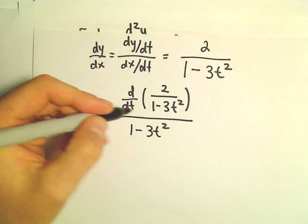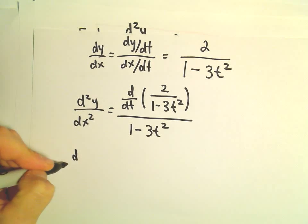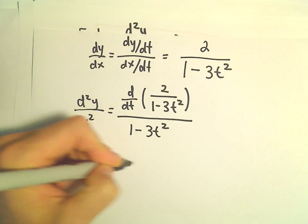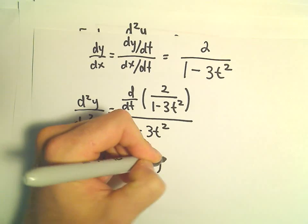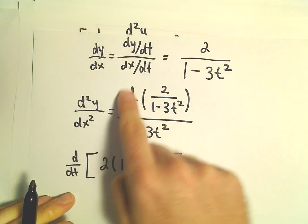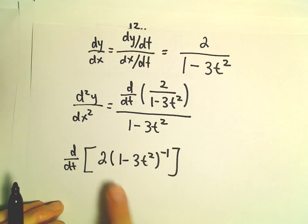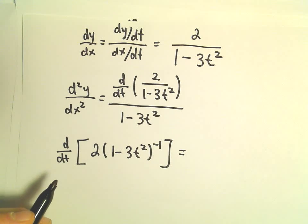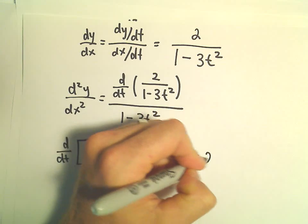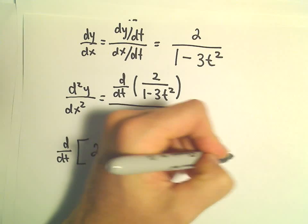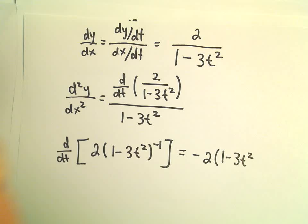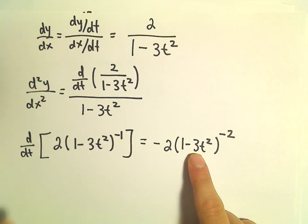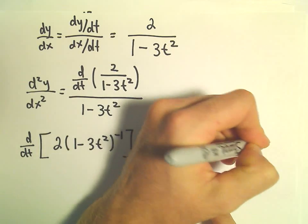Alright, so if we take the derivative, I'm just going to do the numerator off to the side. So we could write this as 2 times 1 minus 3t squared to the negative first. Again, I'm just focusing on the numerator for the moment and just bringing the denominator upstairs. We would use the chain rule in this case. So we would get negative 2, leave the inside alone, 1 minus 3t squared, subtract 1 from the exponent, and then we would have to take the derivative of the inside, which is going to give us negative 6t.